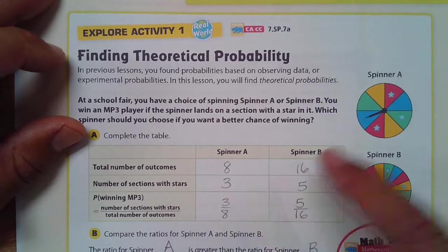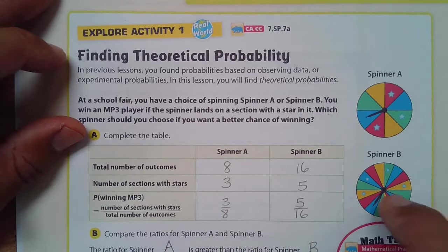The number of sections with stars is 1, 2, 3 here. And there are 1, 2, 3, 4, 5 here.